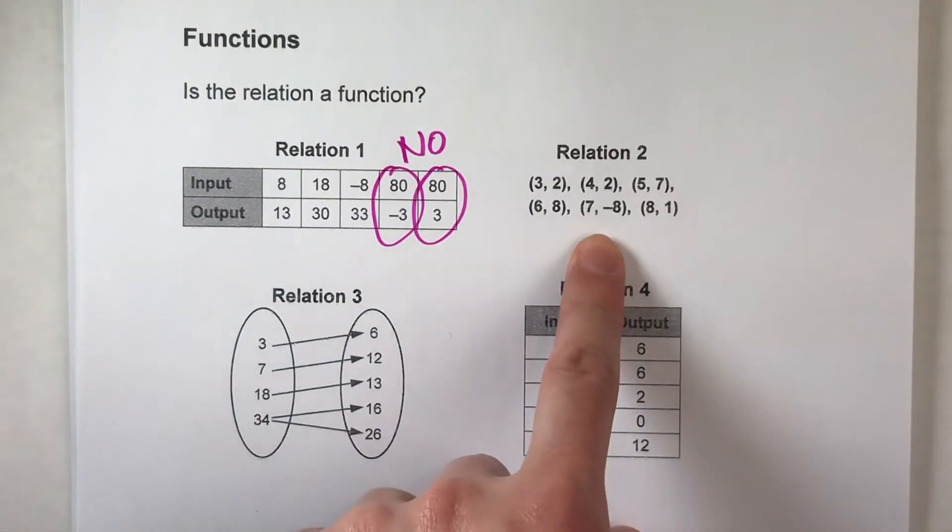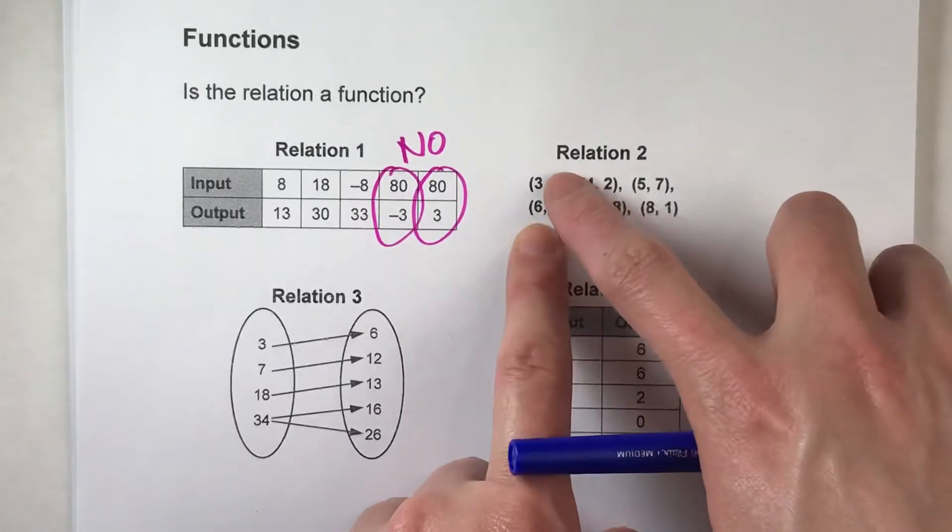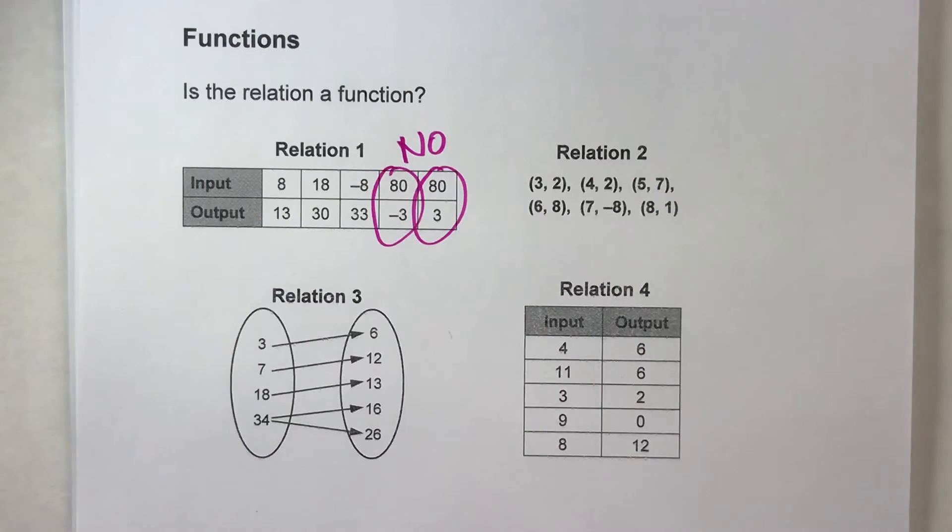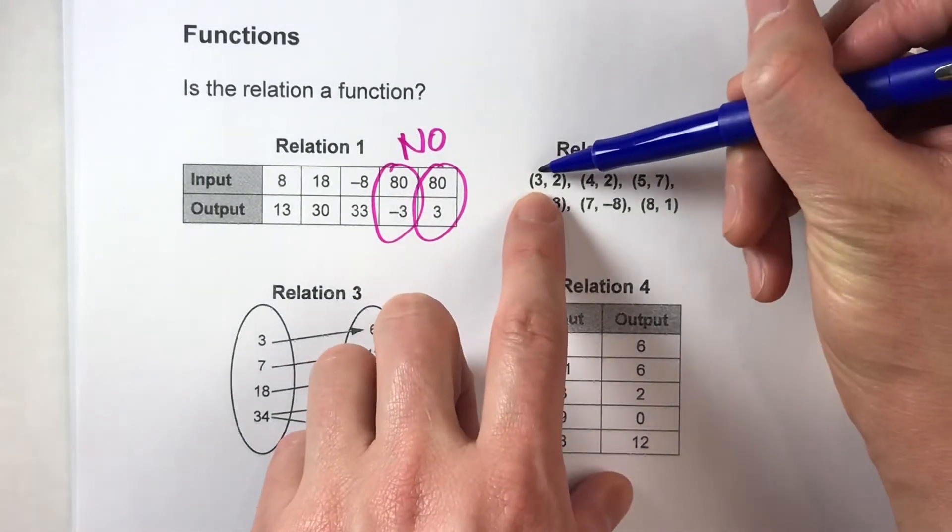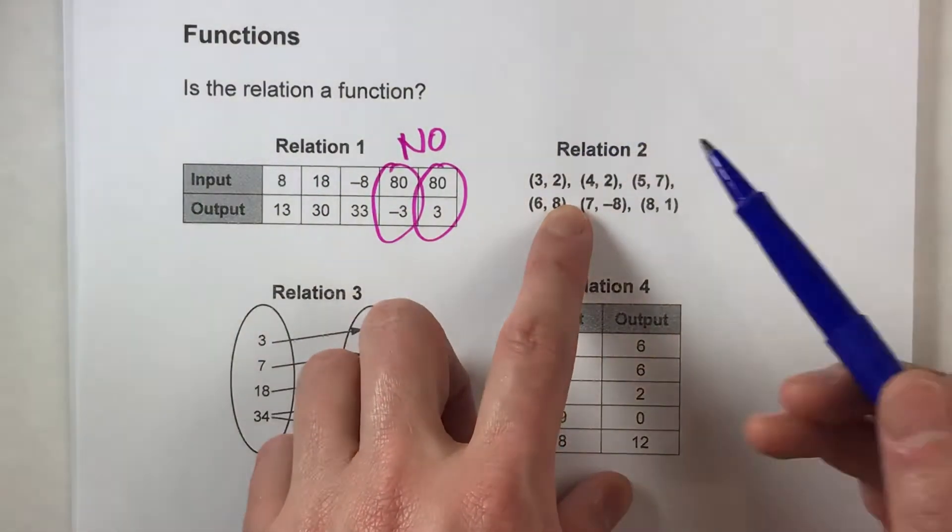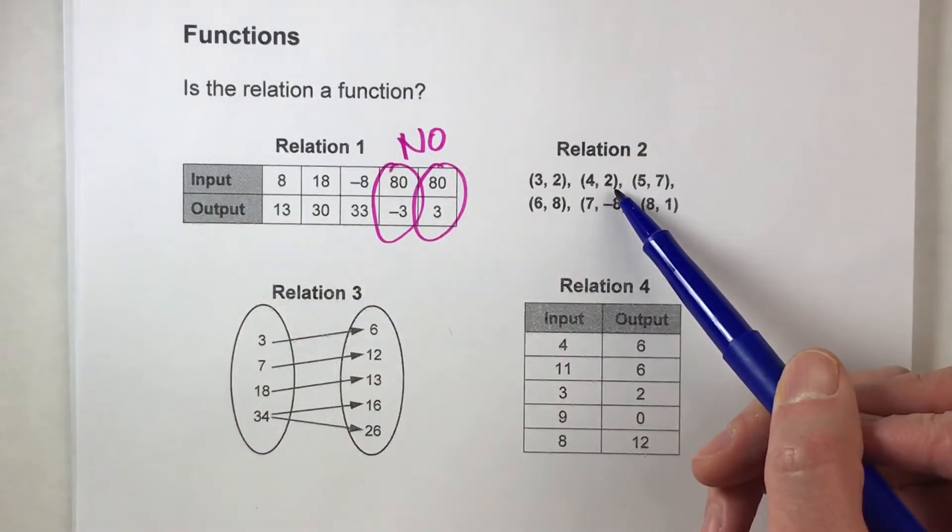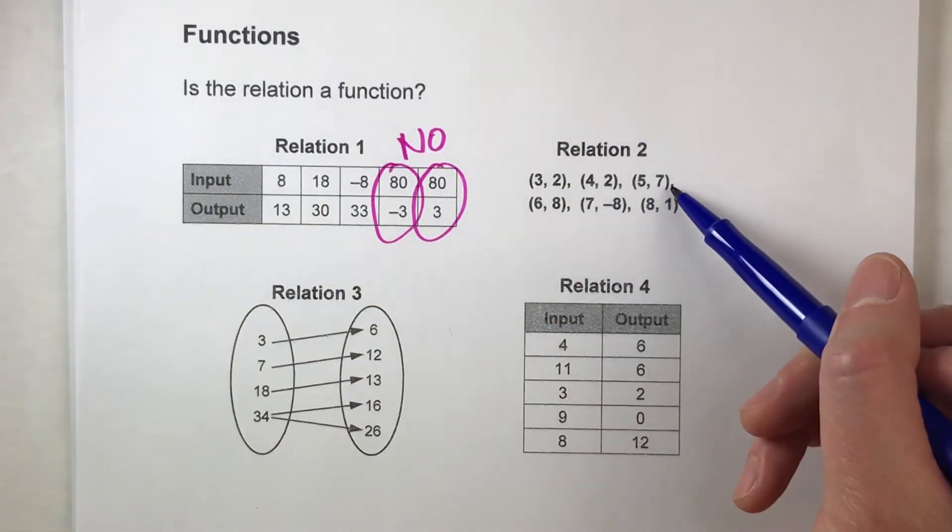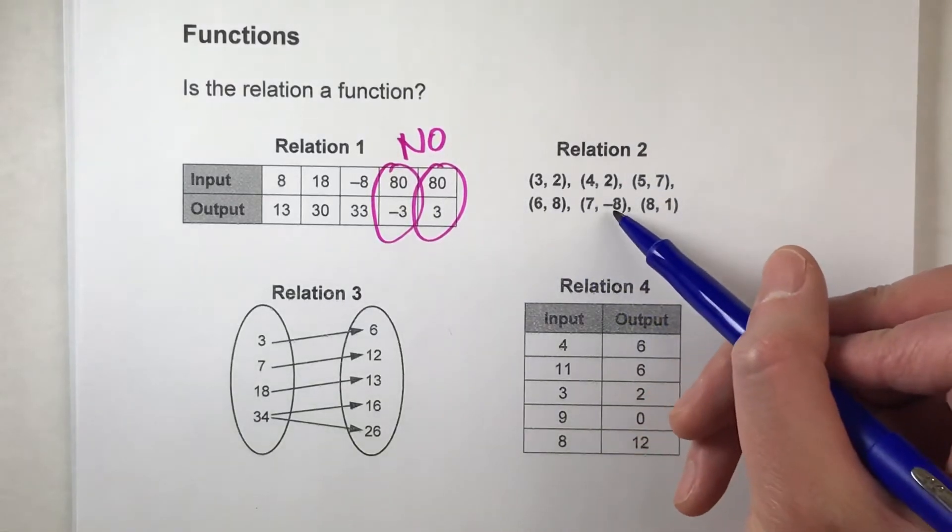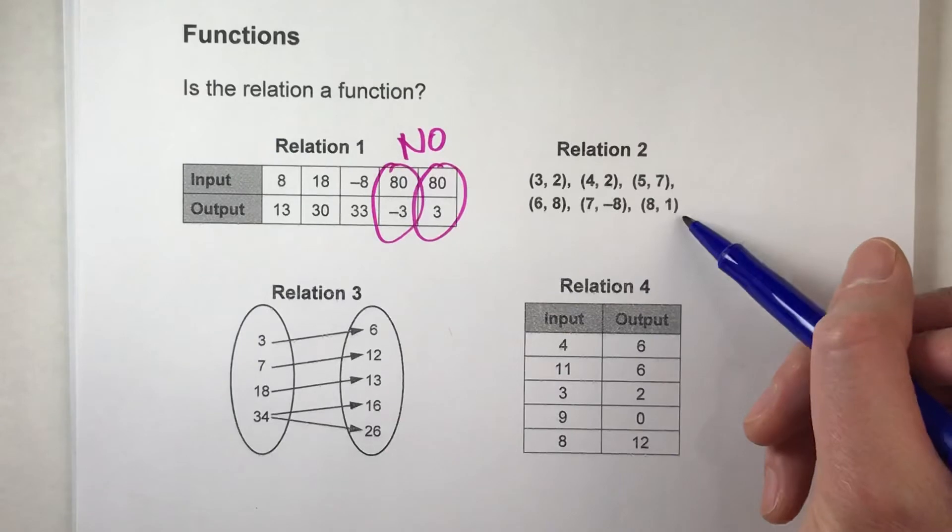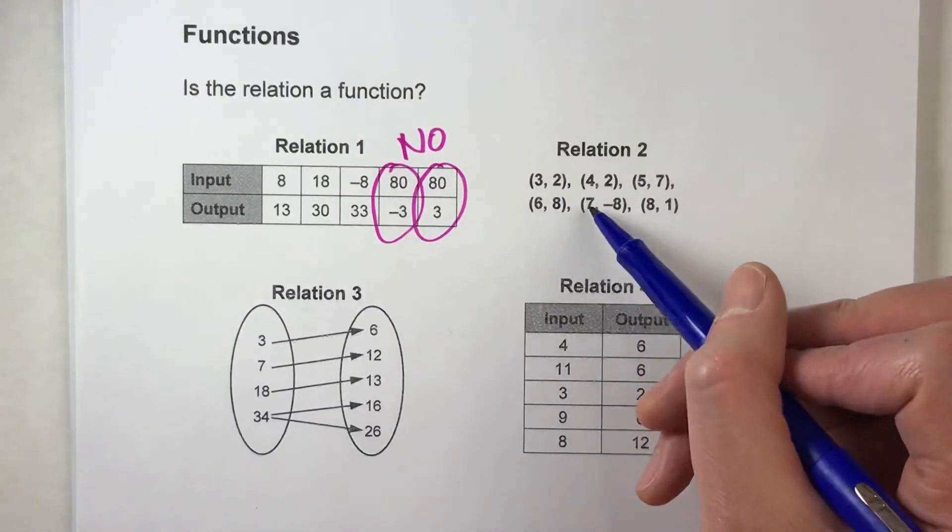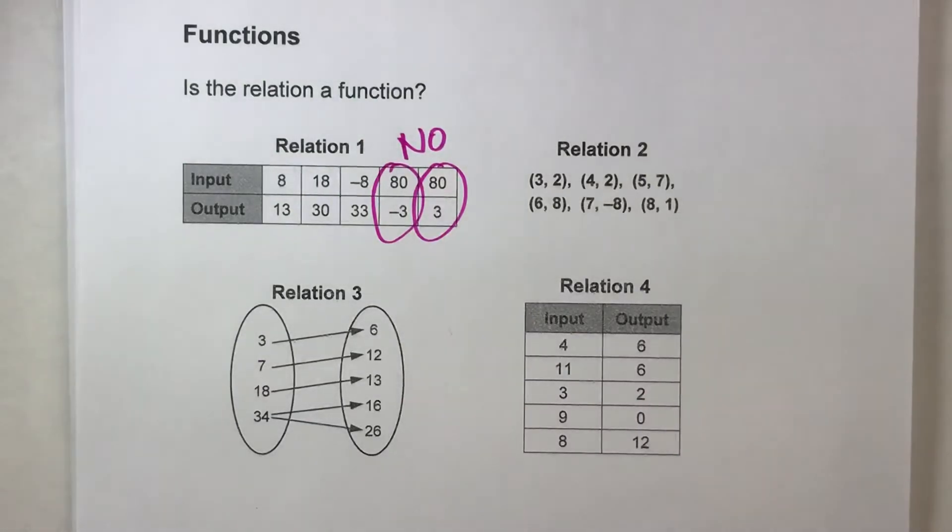Look at relation 2. It's very similar except it's not written in a table format, it's written as a list of coordinates but you can kind of read it the same way. 3 is my input, 2 is my output. So if I input 3 I output 2. If I input 4 I get a 2. Input 5 I get a 7. Input 6 I get a 8. Input 7 I get a negative 8 and I input 8 I get a 1. Notice for every single one of these inputs I only got one output.